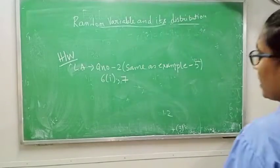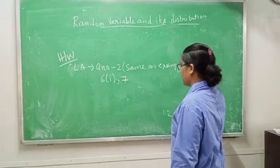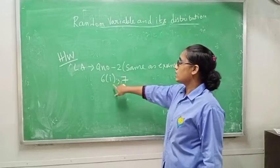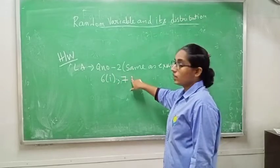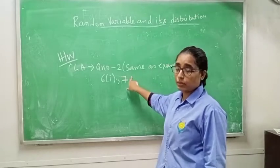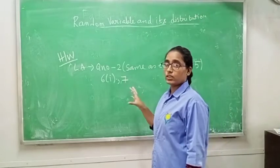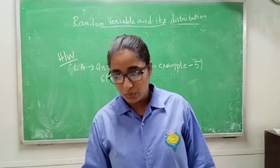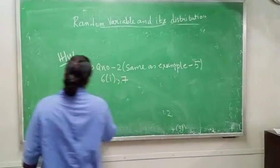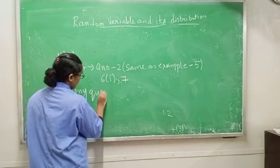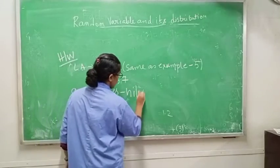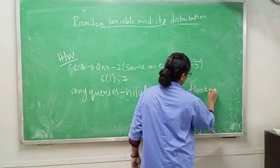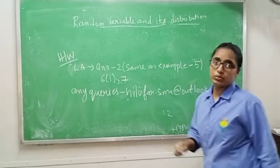Class 12 homework: long answer question number 2, same as example 5 in your book. Also questions 6, 1, and 7. For question 7, we have done some portion in short answer type; you have to first make the distribution table, then find mean and variance. If you face any problem, ask me by leaving a comment.